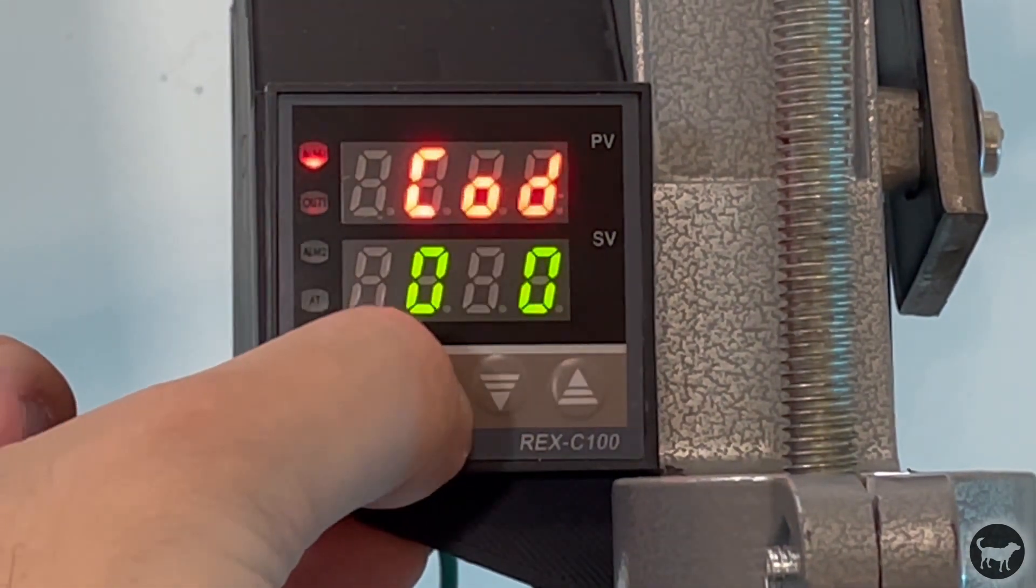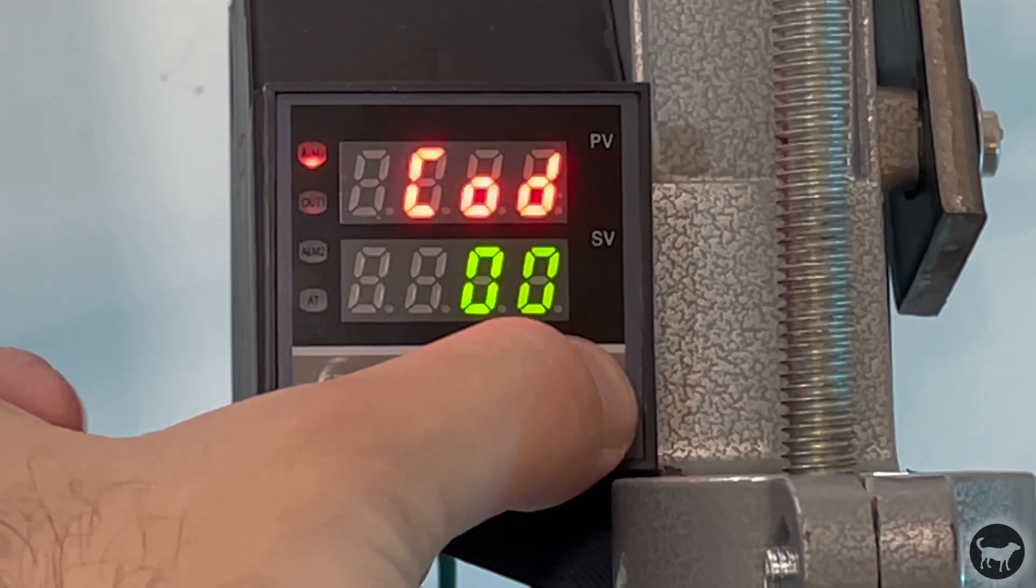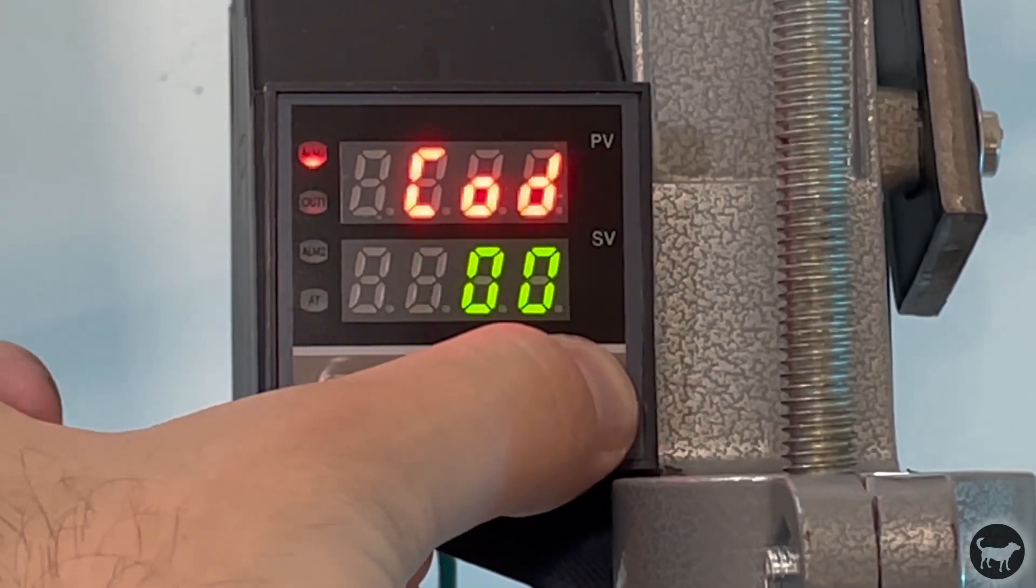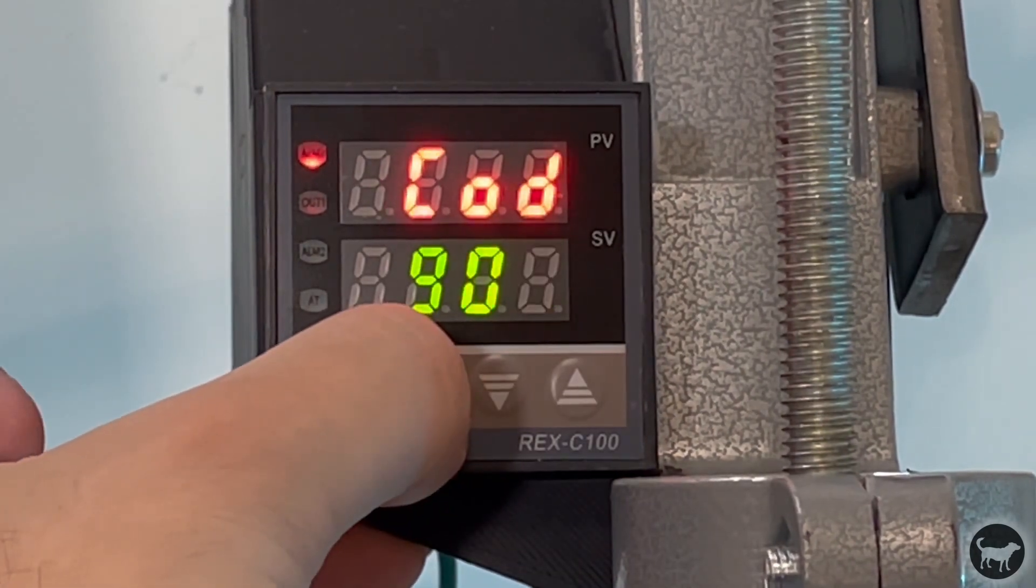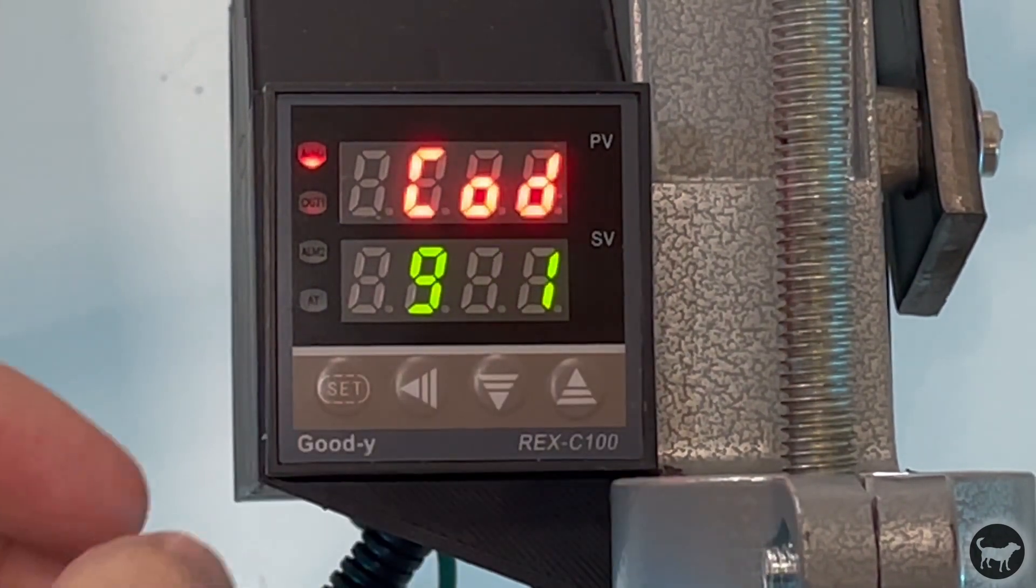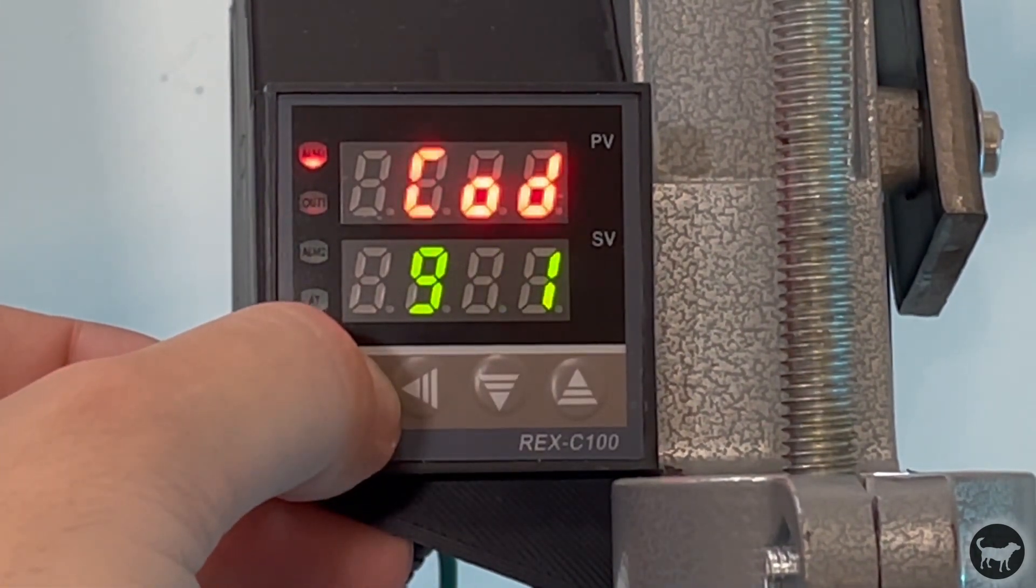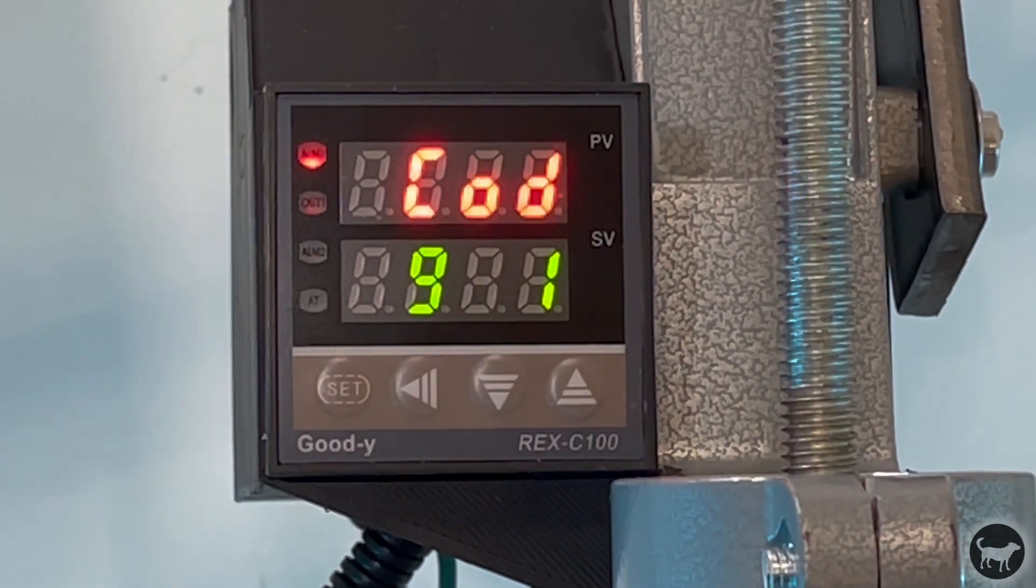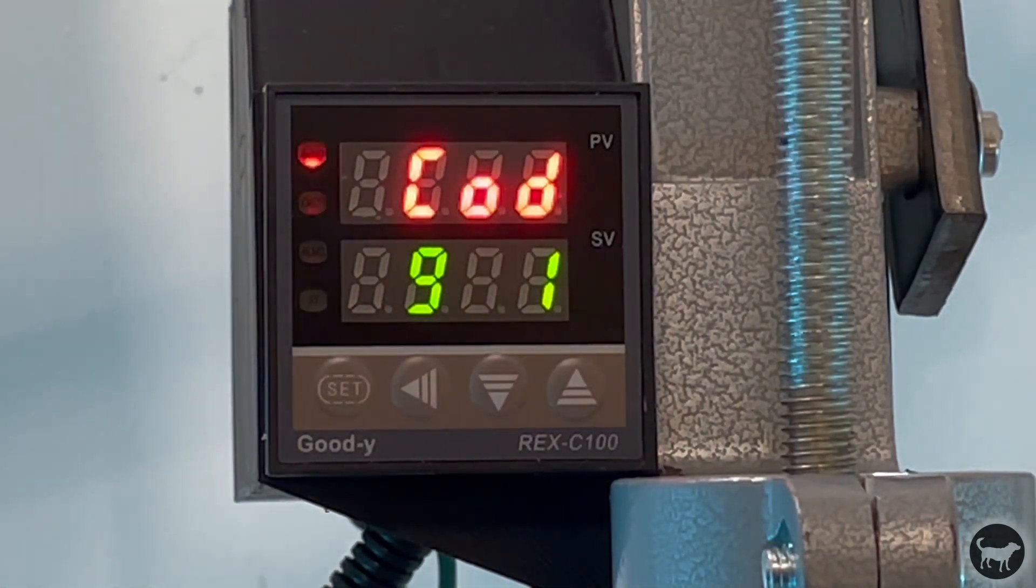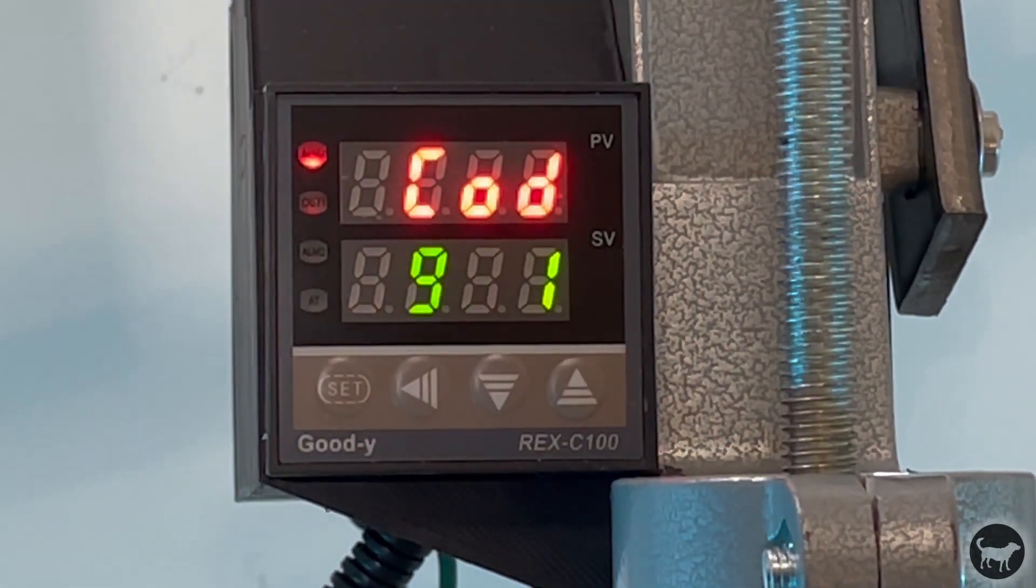And you would change this code to 9, 1, 1, and then hit set. And what that is going to do is actually reset your PID controller to its factory settings.